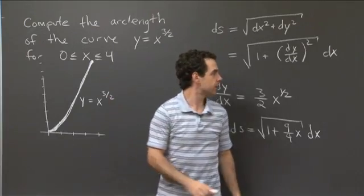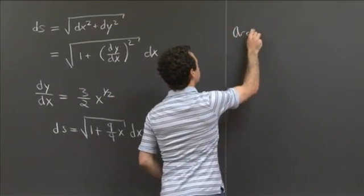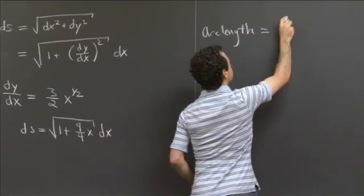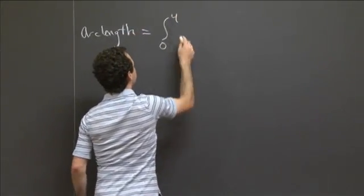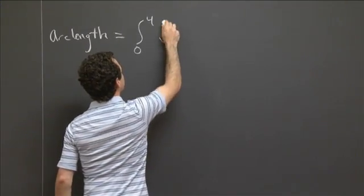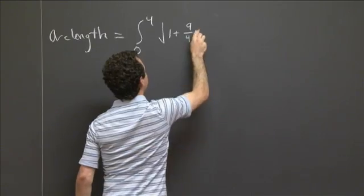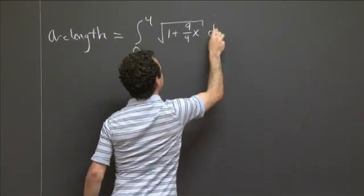So the arc length in question is the integral from 0 to 4 of square root of 1 plus 9 fourths x dx.